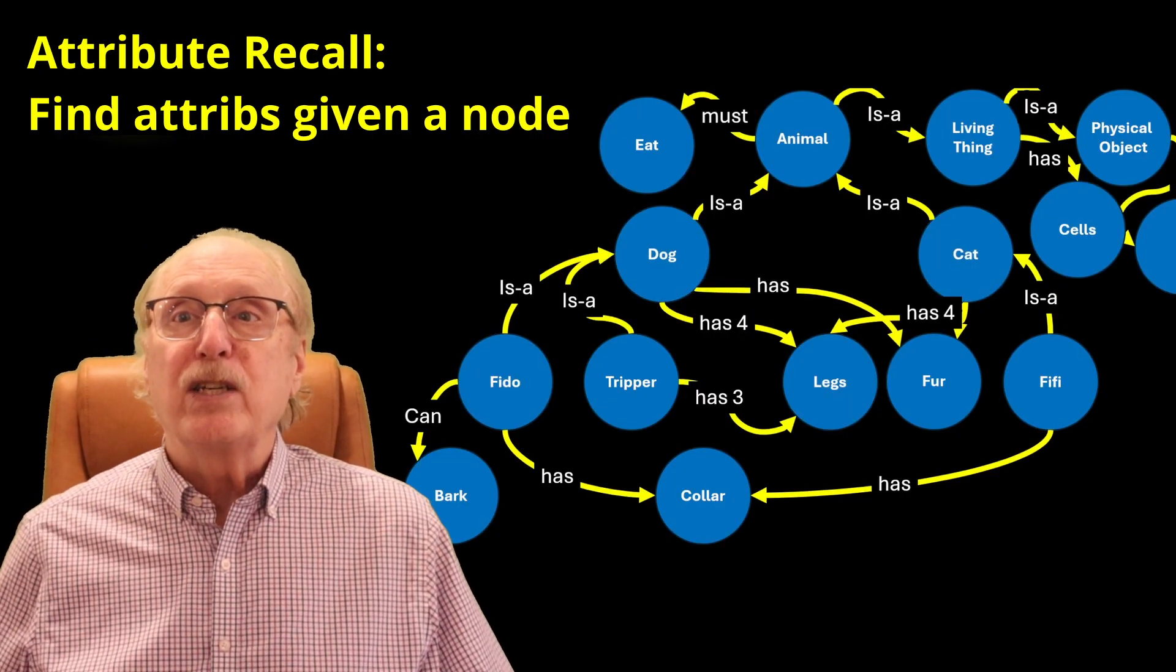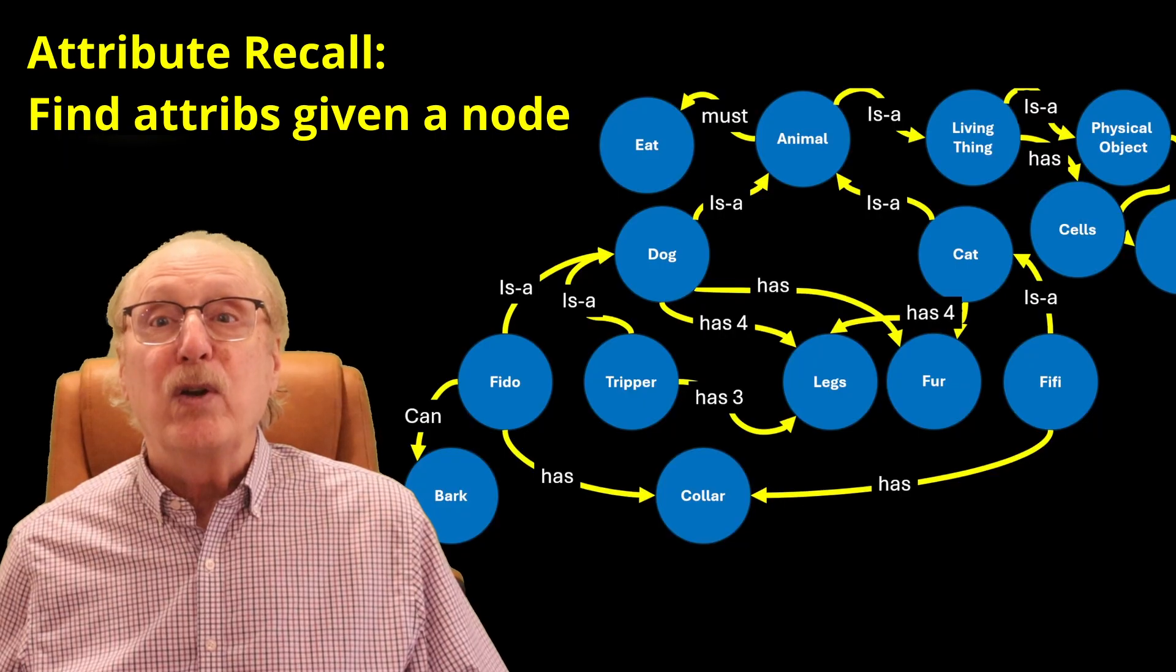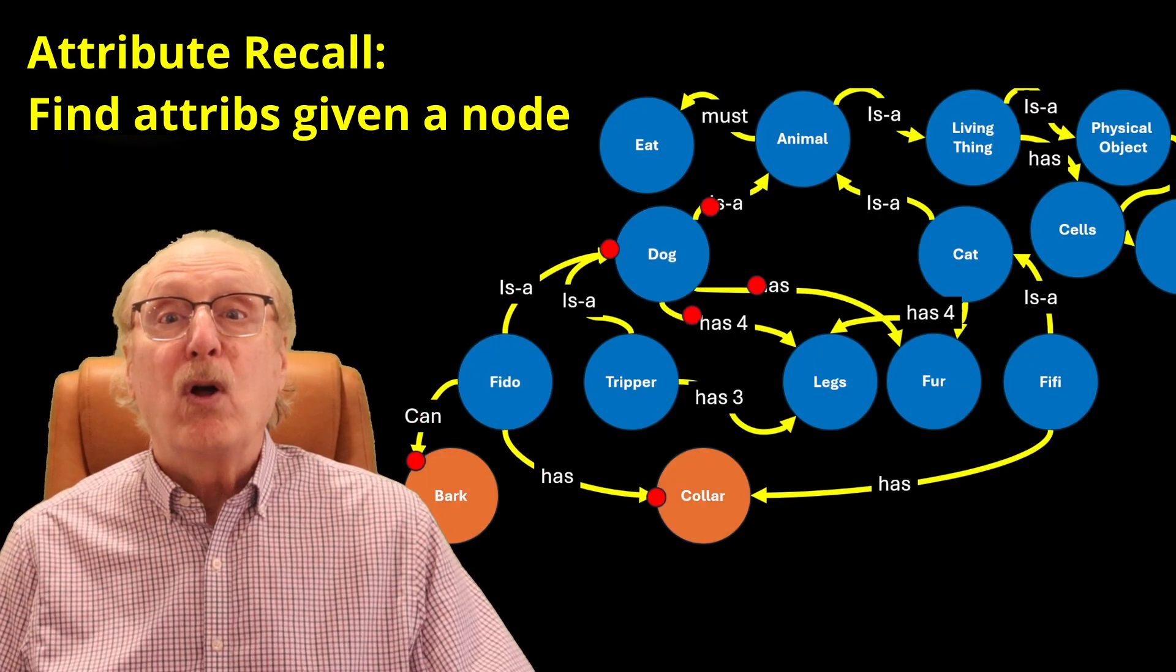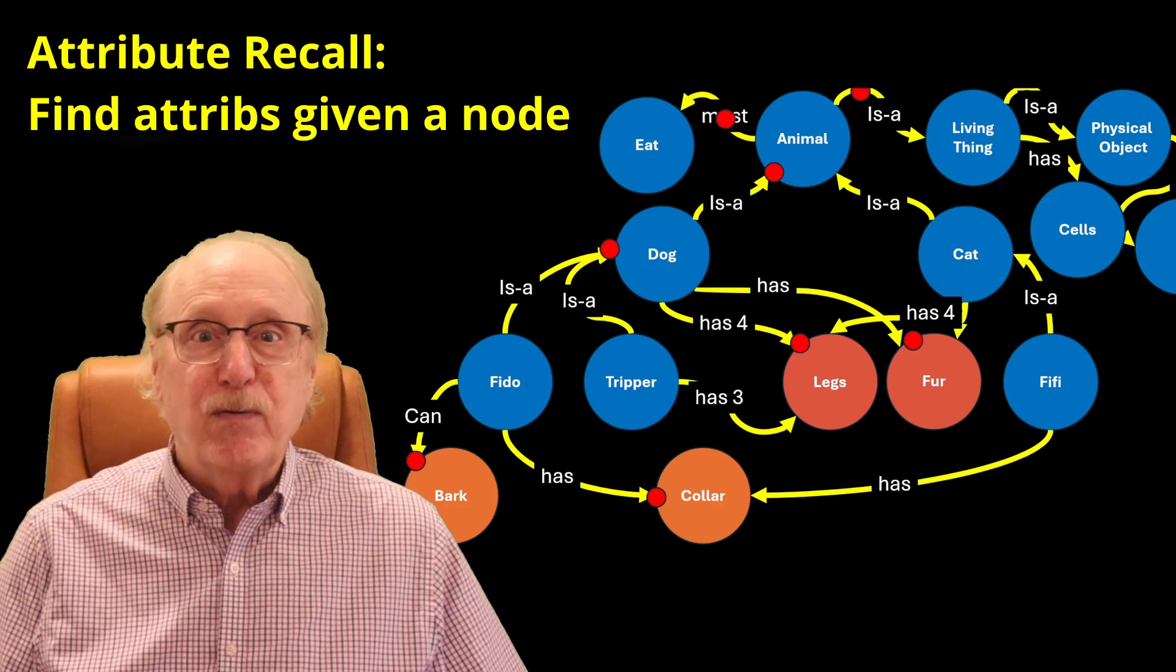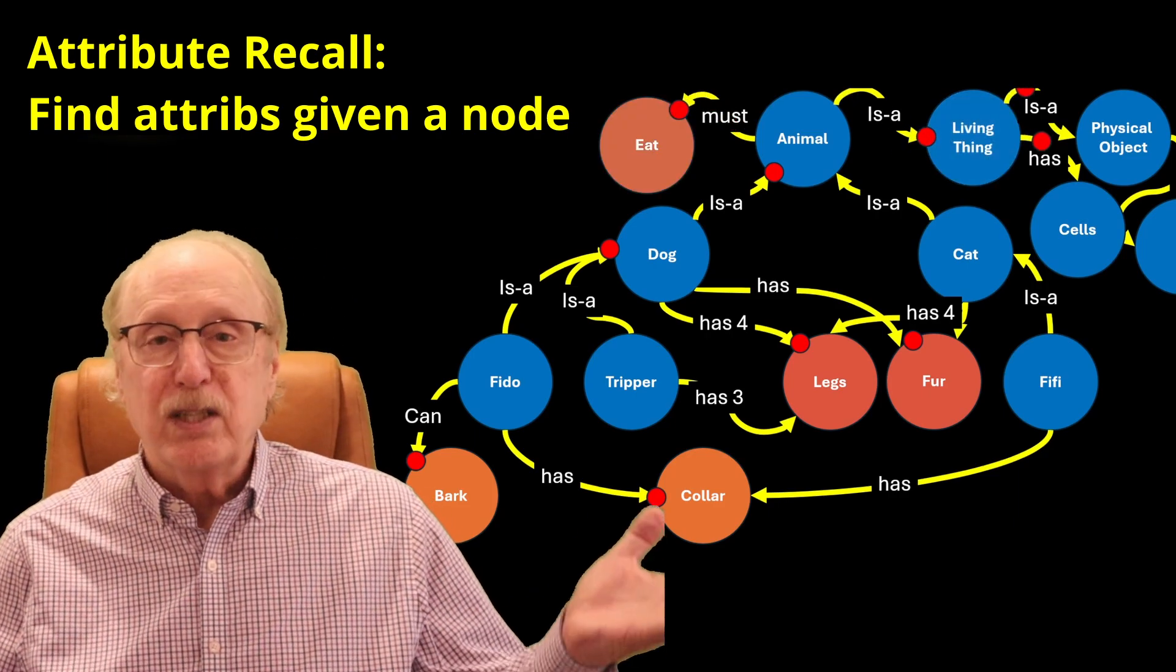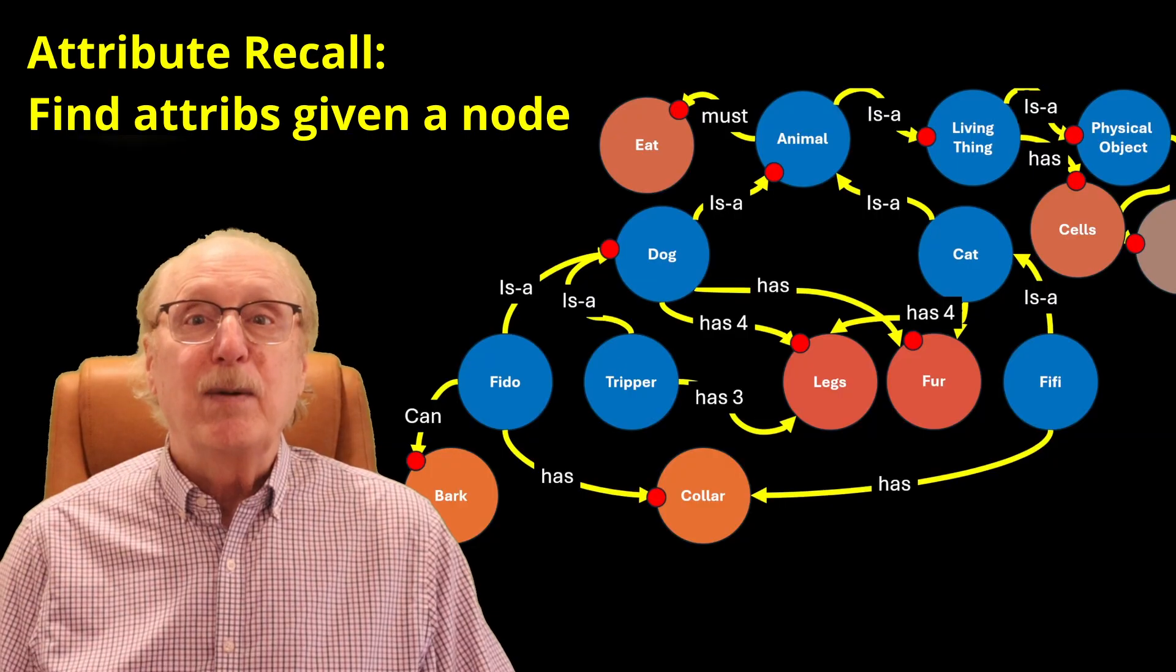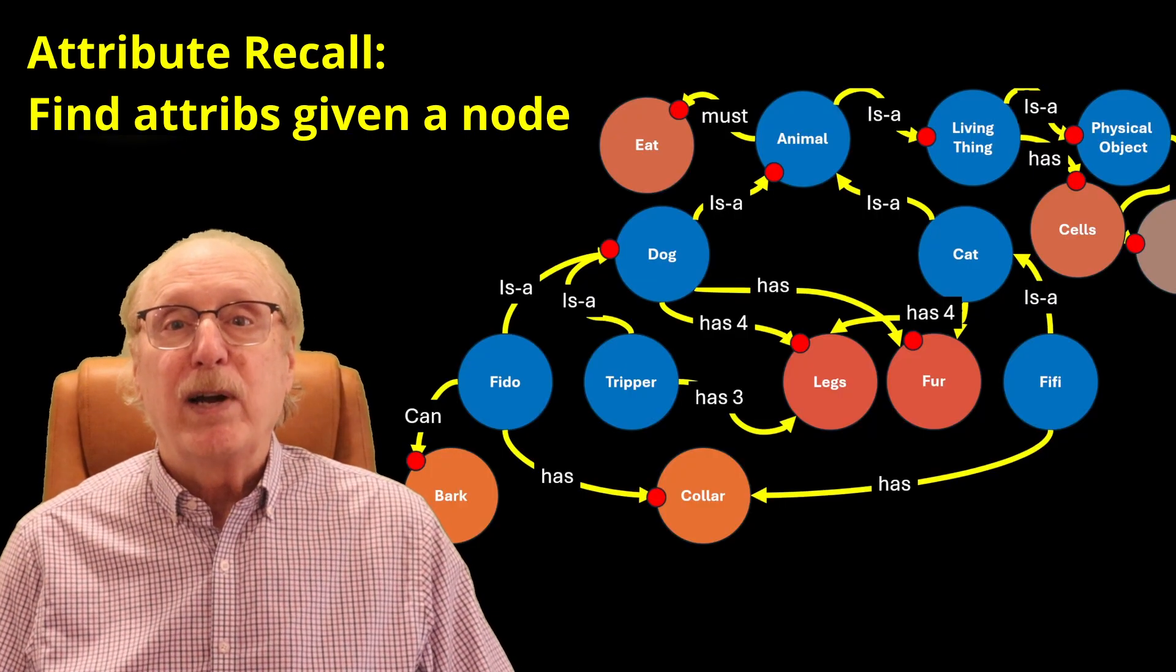Attribute recall, on the other hand, is what happens when you start with a known concept node like FIDO and want to retrieve all its related attributes: has four legs, is a mammal, can bark, etc. Both of these searches are complicated by the fact that attributes may be inherited within the graph.